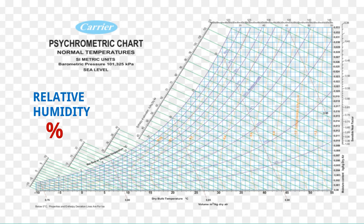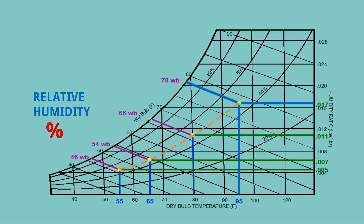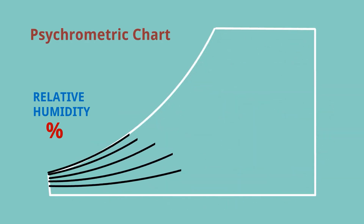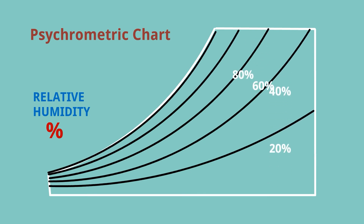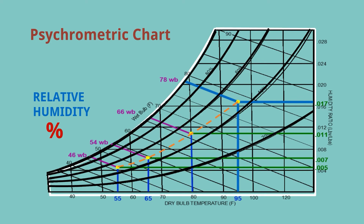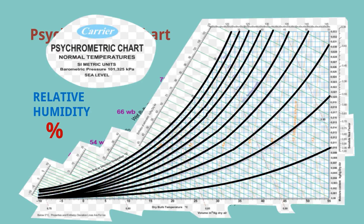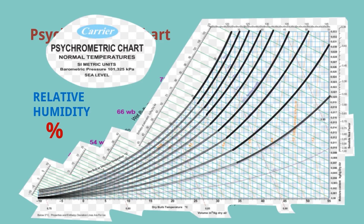Now let's see relative humidity on the psychrometric chart, where it is indicated in percentage. This is a simplified psychrometric chart — a ray diagram for clear understanding. These lines indicate relative humidity: 20%, 40%, 60%, 80%, and 100%, which is the saturation curve. In the actual psychrometric chart, the relative humidity lines range from 10% to 100%.